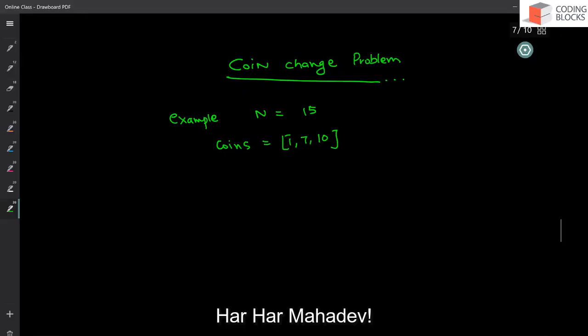We are going to talk about the coin change problem and see the implementation. We saw one example where n is 15 and you have certain coins — you want to count the minimum number of coins needed to make the change. If you have a large problem with a large denomination, we reduce it to subproblems.